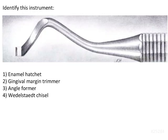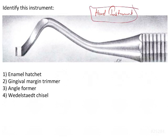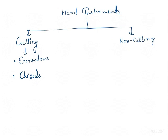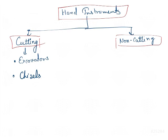We have to identify this instrument, which is a hand instrument. Before answering, we need to understand the classification of hand instruments used in operative dentistry. Hand instruments can be cutting or non-cutting. Non-cutting instruments include mirrors, explorers, probes, and amalgam condensers.